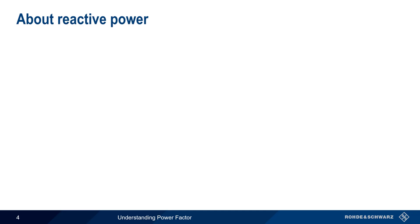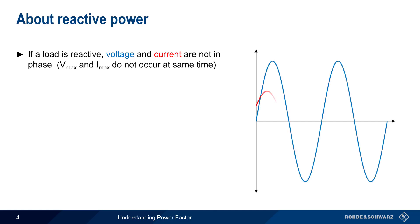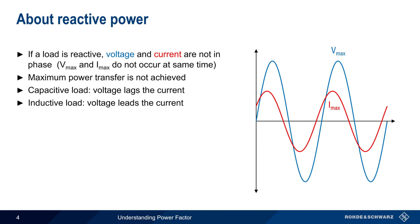However, if the load has a reactive component, then the voltage and current will not be in phase. Vmax and Imax will occur at different times, so maximum power transfer will not be achieved. The direction of the phase shift between voltage and current depends on the nature of the reactance. If the load is capacitive, voltage will lag the current. And if the load is inductive, voltage will lead the current.